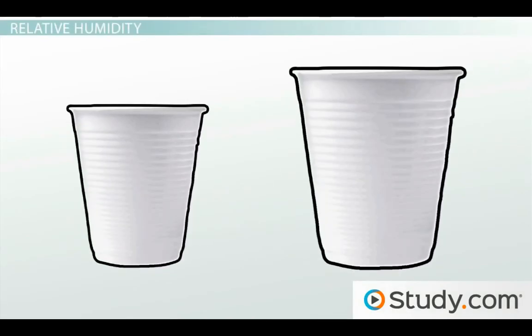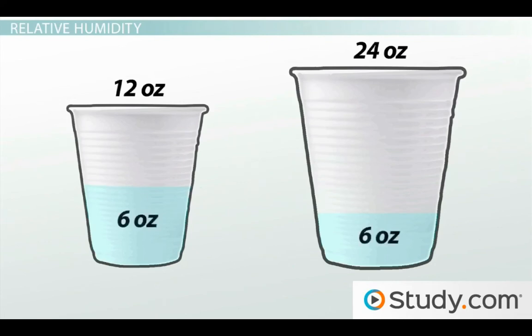Let's look at an example. You have two cups, one that can hold a maximum of 12 ounces and one that can hold a maximum of 24 ounces. Now put six ounces of water in each cup and you'll notice that the smaller cup is fuller than the larger cup, even though they have the same amount of water in them.